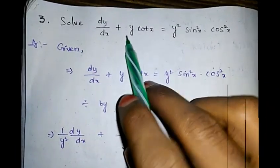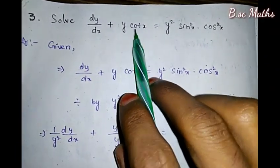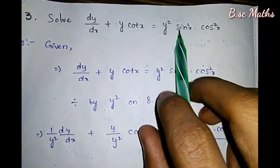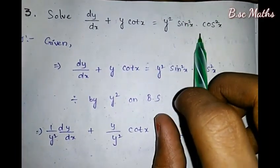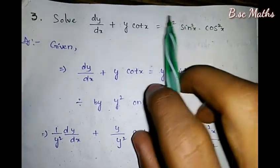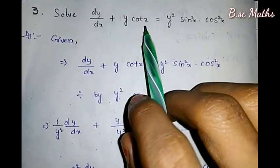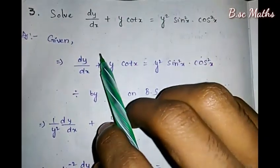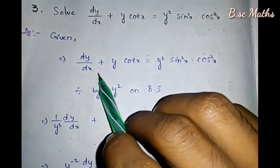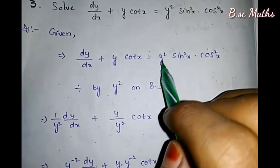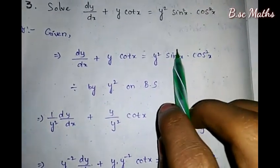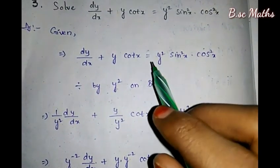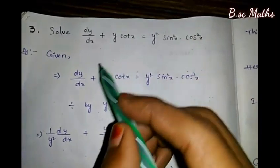How to solve dy/dx plus y·cot(x) equals y²·sin²x·cos²x. We are going to solve this problem.